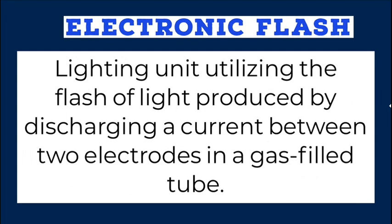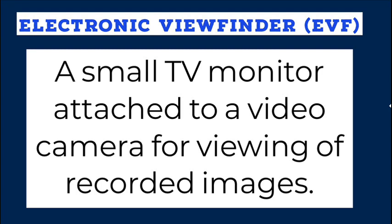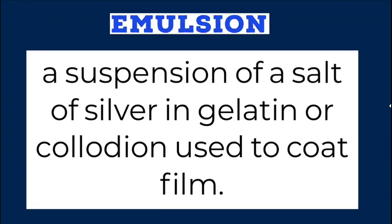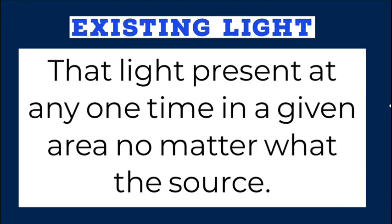Electronic flash: a lighting unit utilizing the flash of light produced by discharging a current between two electrodes in a gas-filled tube. Electronic viewfinder (EVF): a small TV monitor attached to a video camera for viewing of recorded images. Emulsion: a suspension of a salt of silver in gelatin or collodion used to coat film. Existing light: that light present at any one time in a given area, no matter what the source.